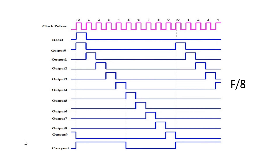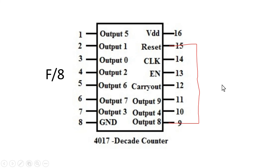Now let us see how we divide the input clock frequency f by 8. In that case, we have to shift the pulse two clock cycles to the left, so we connect output 8 to the reset signal. When output 8 is connected to the reset signal, output 0 will go high at that point and all other signals will be 0. All output signals will be shifted two clock cycles to the left, and all signals will have the frequency f/8. This is the final logic circuit diagram when IC4017 divides the input frequency f by 8.